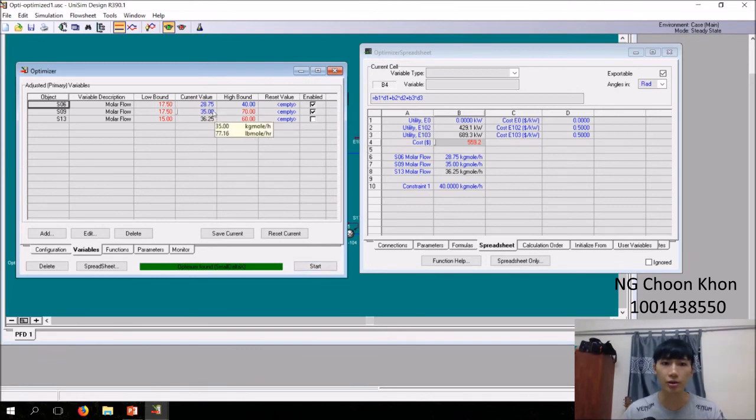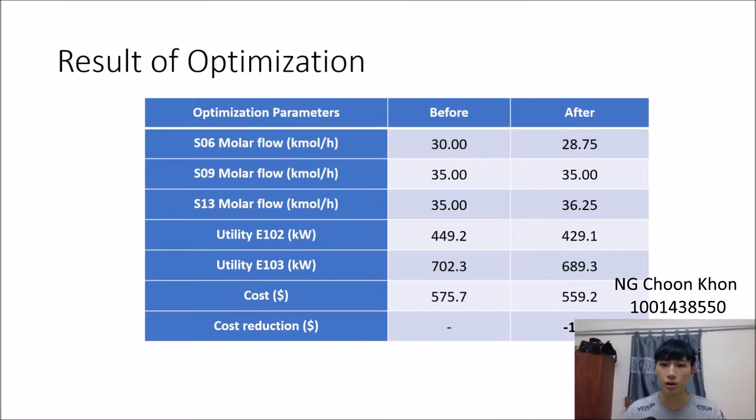First, you have to enable any of the two streams, then start. The result is 38.75, 35, and 36.25. As you can see from the summary, the total cost reduction is 16.5 dollars, which is not very high. This is because we consider the constraint that we shouldn't have more than 40 kmol per hour, which limits the way we optimize it.